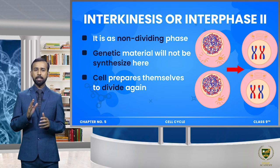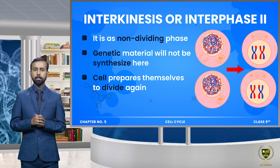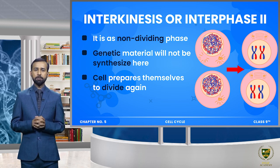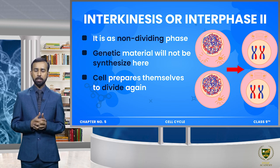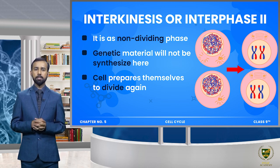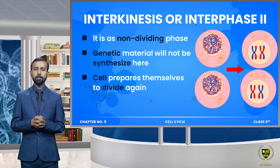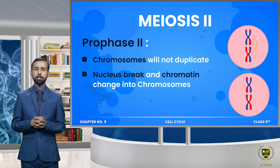Cytokinesis کے بعد جو cells ہیں وہ ایک non-dividing stage میں کچھ دیر کے لیے چلے جاتے ہیں - اس کو ہم کہتے ہیں interphase 2۔ Interphase 2 جو ہے یہ interphase 1 سے مختلف ہے - interphase 2 میں جو genetic material ہے اس کی synthesis نہیں ہوتی یعنی synthesis phase involve نہیں ہوگی۔ اس میں صرف associated requirements like mitochondria اور ribosomes وغیرہ produce ہو سکتے ہیں۔ Interphase 2 میں cell کچھ دیر rest کرتے ہیں اور پھر اپنے آپ کو meiosis 2 کے لیے prepare کرتے ہیں۔